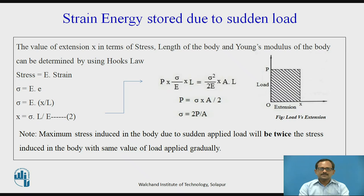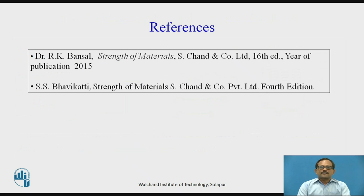If you recall, the stress induced in the body due to gradually applied load is equal to P by A. Therefore, from these two equations, we can conclude that the maximum stress induced in the body due to suddenly applied load will be twice the stress induced with the same value of load applied gradually. The strain energy can then be calculated using this stress. This content is referred from the book Strength of Materials by Dr. R.K. Bansal and S.S. Rattan. Thank you.